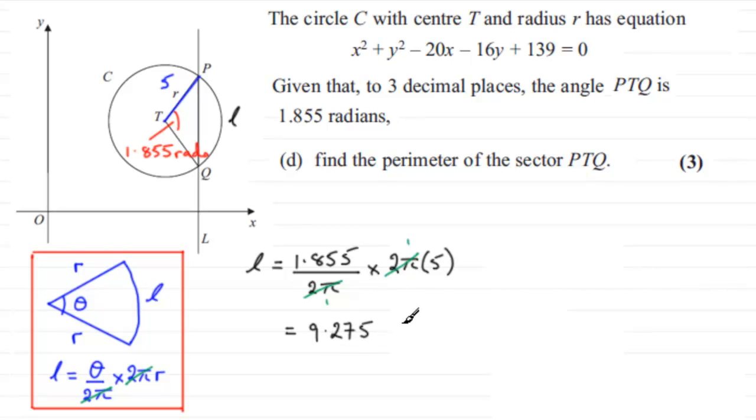When it comes to finally working out the perimeter, we can say that therefore the perimeter PTQ equals 9.275 plus the 5 here and the other radius 5, so it's plus a total of 10. You obviously get 19.275.